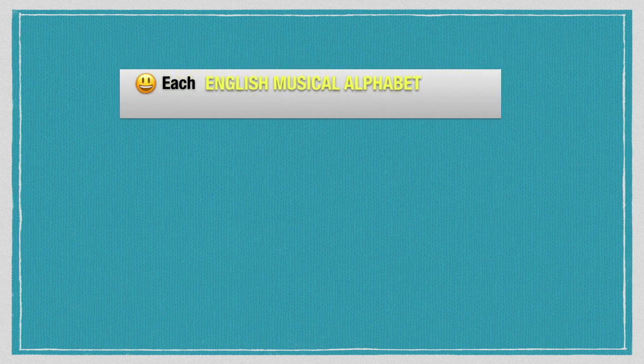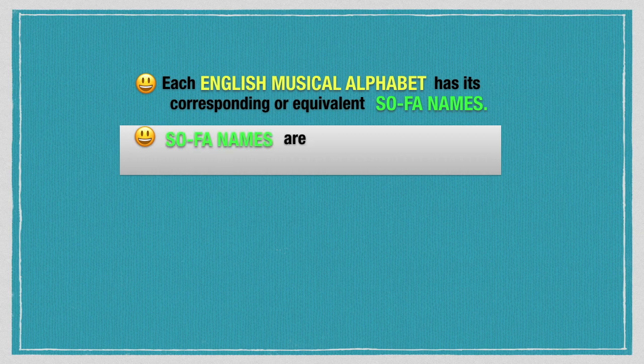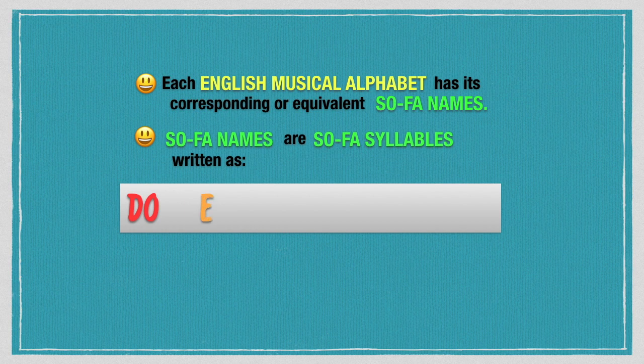Each English musical alphabet has its corresponding or equivalent sofa names. Sofa names are sofa syllables written as do, re, mi, fa, sol, la, and ti.